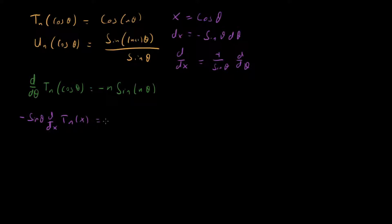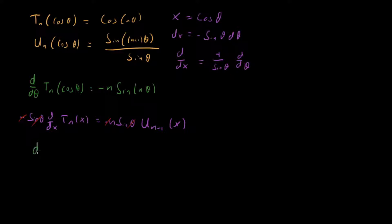Plugging this in, we get that d/dθ acting as −sinθ·d/dx on T_n(x) equals the right-hand side. Sine(nθ) can be expressed in terms of Chebyshev polynomials of the second kind, giving us −n·sinθ·U_{n−1}(x). We can then cancel the minus sign and the sinθ on both sides.